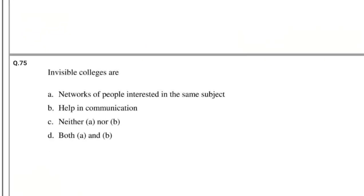Question number 75: Invisible Colleges are — options: (A) Networks of people interested in the same subject, (B) Helps in communication, (C) Neither A nor B, (D) Both A and B. The answer is Both A and B.